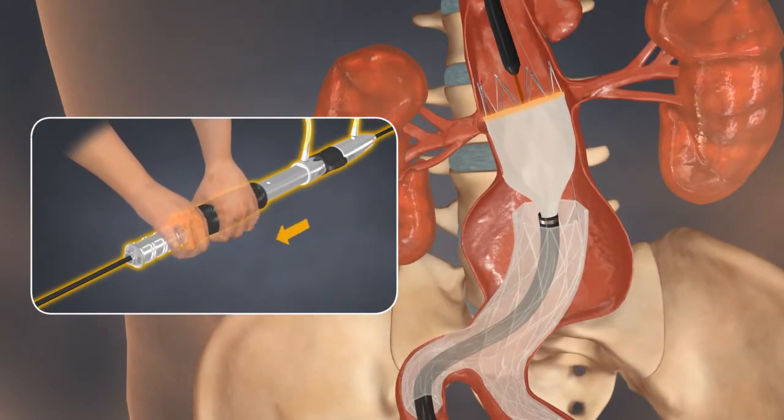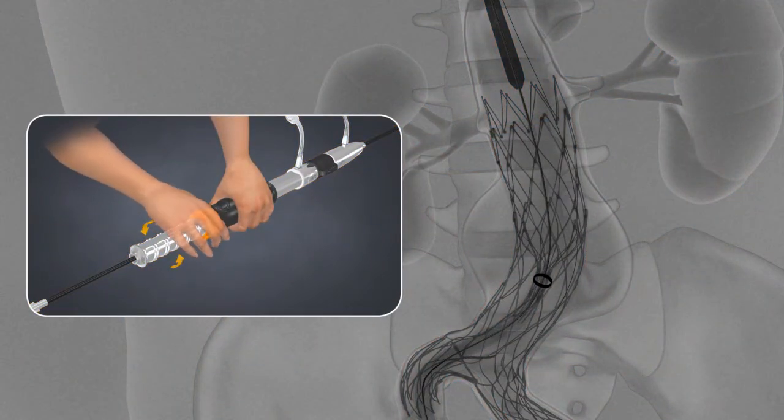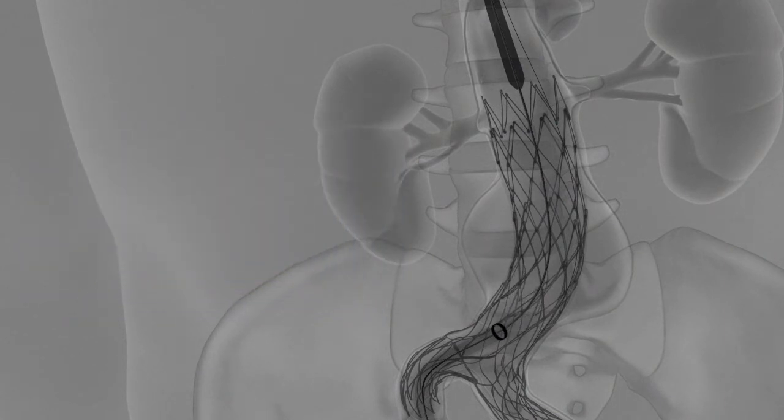Reposition the aortic extension just below the distal renal artery. Deploy the remainder of the aortic extension by continuing to rotate the dial or by pulling the dial.